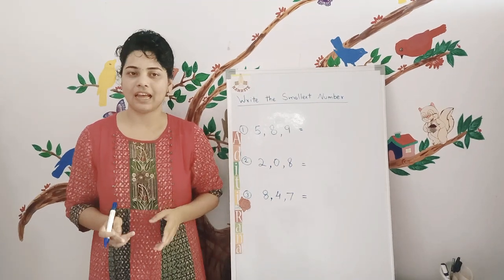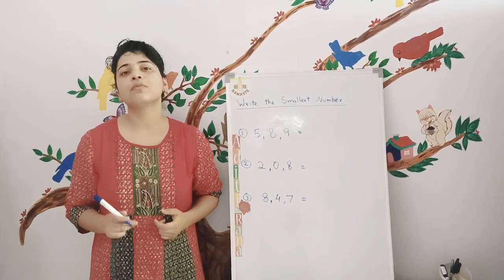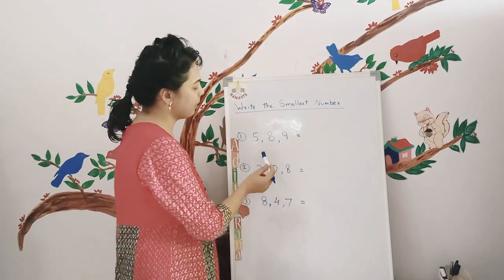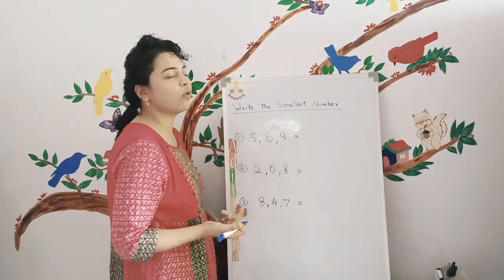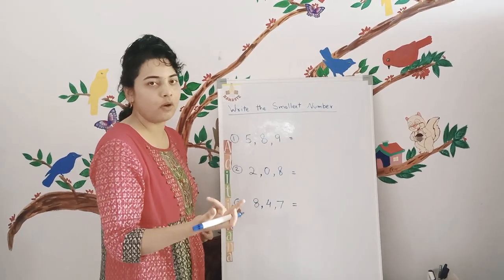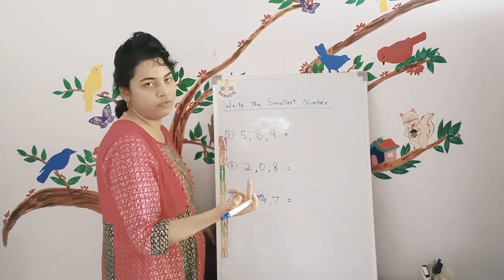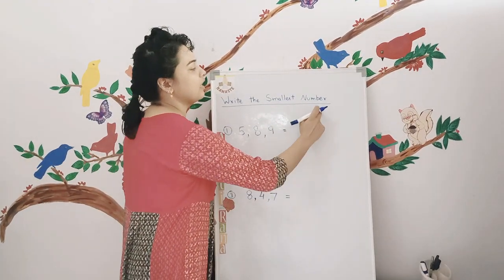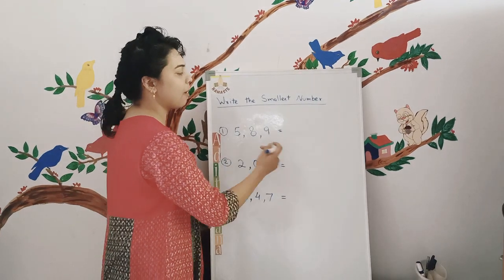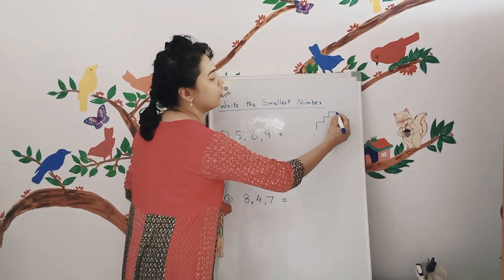Hi everyone, I am Aditi Rana, and today's topic is: write the smallest number using the given digits. So basically you have three digits and you use them to write the smallest number. To create the smallest number, you have to write the numbers in ascending order, and ascending order means arranging things from the smallest to the greatest.